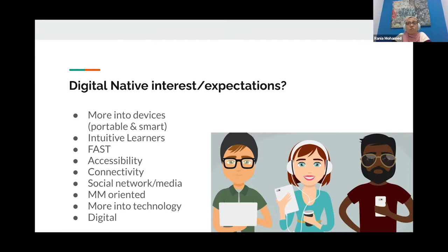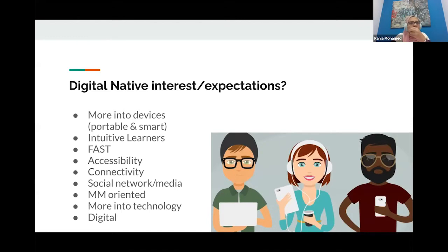Digital natives always talk about speed, expecting very high speed from services they consume. Accessibility and connectivity is very important — they want to be able to do anything from anywhere, across the whole globe, from different applications and different ways of doing things. That's why social networks and social media are important for them — Facebook, Instagram, integration with LinkedIn, different channels they use daily. They want to be connected across the whole world. They also understand technology, making them a sophisticated customer, because it's not easy to satisfy them — they keep increasing expectations and demand for any service.